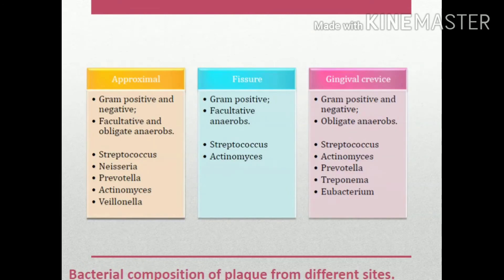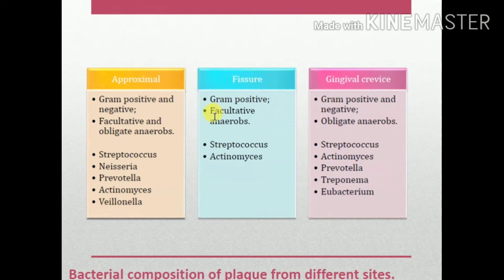Additional components include glycoproteins, mucopolysaccharides, leukocytes, macrophages, small numbers of epithelial cells, and inorganic ions — mainly calcium, phosphorus, and fluorides (approximately 10%). Bacterial composition varies by site: proximal surfaces have Gram-positive and Gram-negative facultative and obligate anaerobes — Streptococcus, Neisseria, Prevotella, Actinomyces, and Veillonella. Fissures have Gram-positive facultative anaerobes — Streptococcus and Actinomyces. The gingival crevice has both Gram-positive and negative obligate anaerobes — Streptococcus, Actinomyces, Prevotella, Treponema, and Eubacterium.